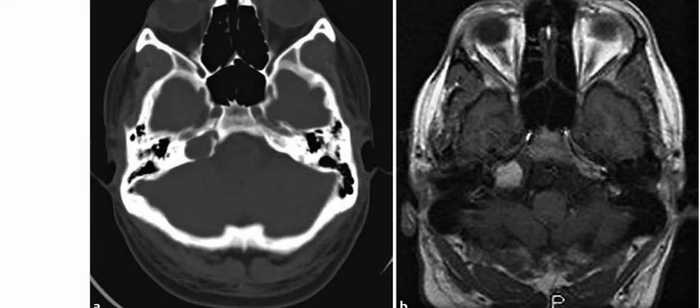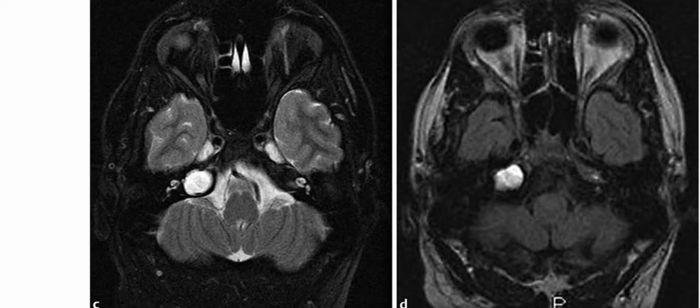These are images of a 37-year-old man presenting with headaches and vision loss. On the axial CT scan in bone windows, there is an expansile lucent lesion within the right petrous apex. This lesion is hyperintense on the unenhanced T1-weighted MRI and also hyperintense on the T2-weighted fat-suppressed MRI sequence.